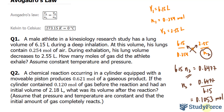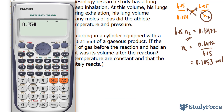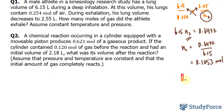Now the question asks how many moles of gas did the athlete exhale? So I have to do one more step before rounding to the correct number of significant figures. I'll take 0.254, the original amount, subtracted by 0.1053, and I get 0.1487. With the correct number of significant figures, this 8 will become a 9 because the 7 is greater than 5.